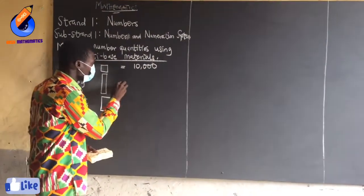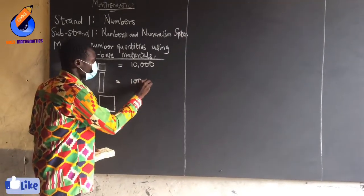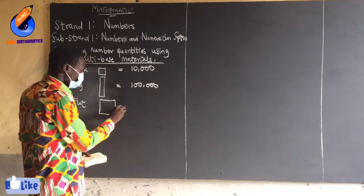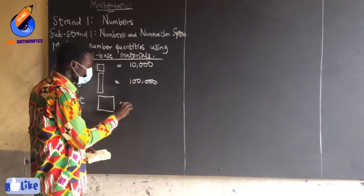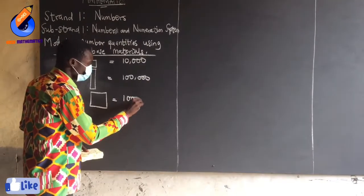One long is 100,000, and one flat represents one million.